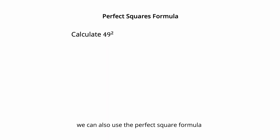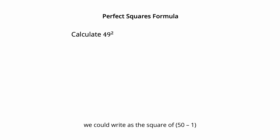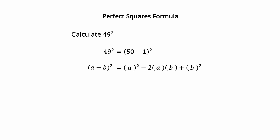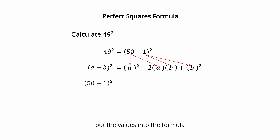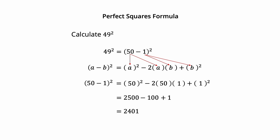We can also use the perfect square formula to make quick calculations, like calculating 49 squared. The trick is to write these numbers as sums or differences. For instance, 49 squared can be written as the square of 50 minus 1. Using the formula (a minus b) squared equals a squared minus 2ab plus b squared, with 50 as a and 1 as b: 50 squared is 2500, minus 2 times 50 times 1 equals minus 100, and 1 squared is 1. The calculated result is 2401.